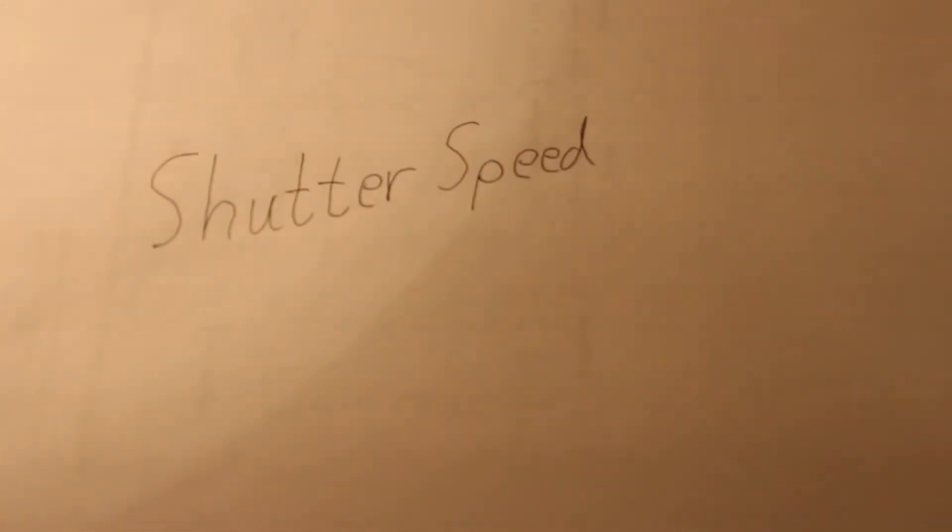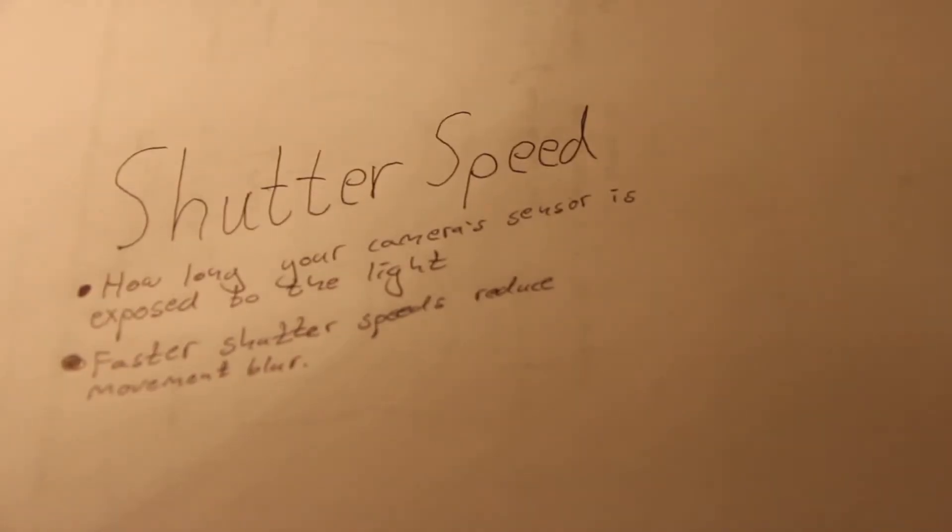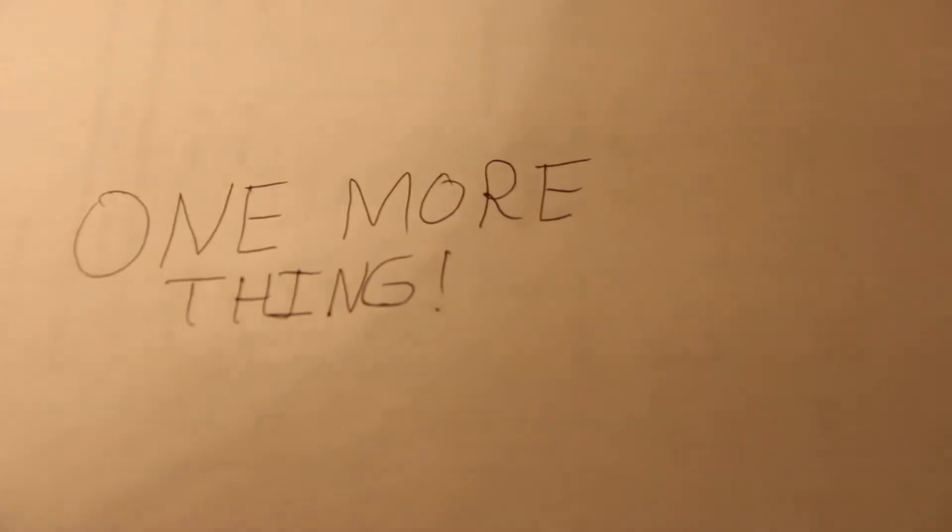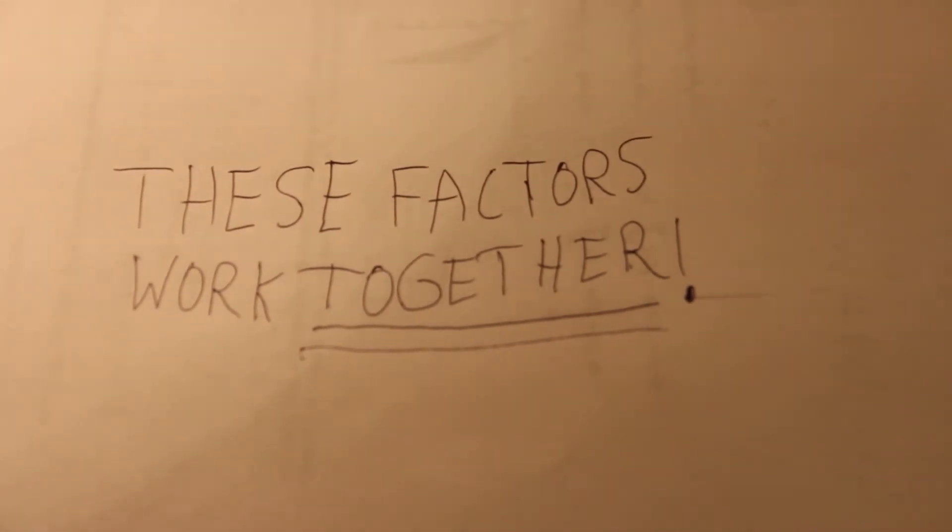Number three, shutter speed. This is simply how long your camera sensor is exposed to the light. Faster shutter speeds will reduce movement blur. That's how simple shutter speed is. One more thing: these factors all work together. Don't think of these factors as independent. The way you set one of these will decide how you set the others.